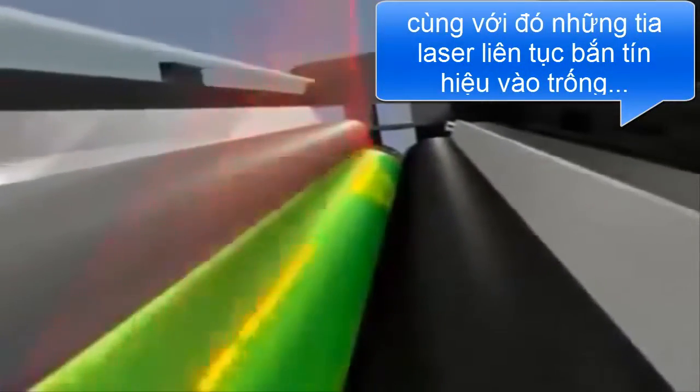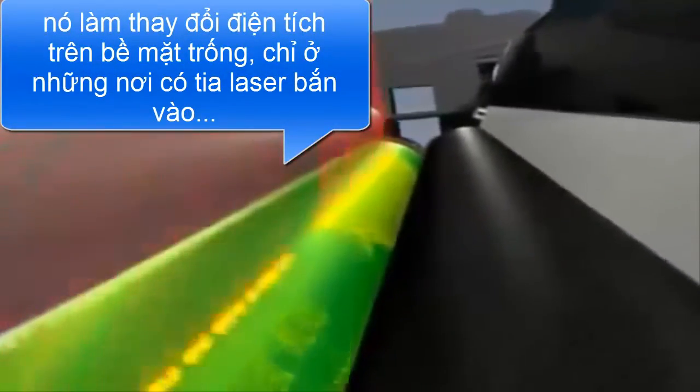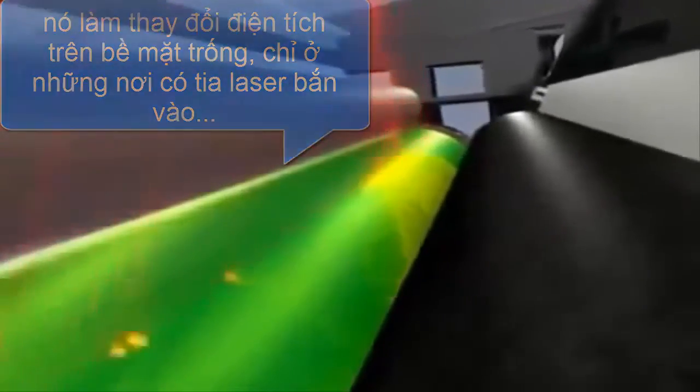The laser strikes the photoconductor drum up to 65 million times a second, creating a chemical reaction that discharges the areas that are negatively charged, resulting in an electrostatic image.